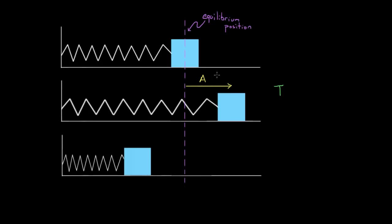For the amplitude, it's kind of obvious. The person or whatever is displacing the mass is the thing determining the amplitude. If you pull the mass back far, you've given this oscillator a large amplitude, and if you only pull it back a little bit, you've given it a small amplitude.